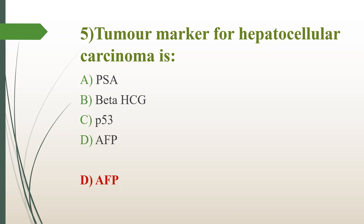Some other important tumor markers: CA-15-3 indicates breast cancer; CA-19-9 indicates pancreatic cancer; CA-125 indicates ovarian cancer; CEA (carcinoembryonic antigen) indicates colorectal cancer. Note down all markers — very important.